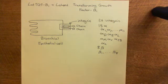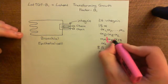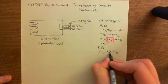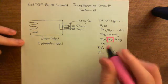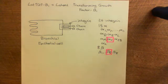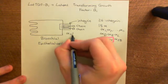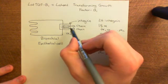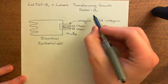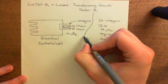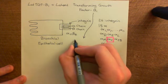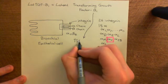The integrin that's very important for our story is the alpha V beta 6 integrin — using the alpha V alpha subunit and beta 6 as the beta subunit. What happens is that latent TGF-β1 comes to this alpha V beta 6 integrin and is activated into TGF-β1 by binding to it.